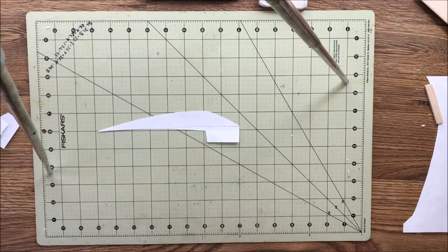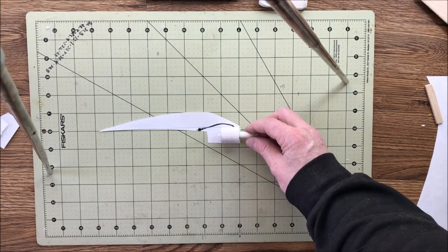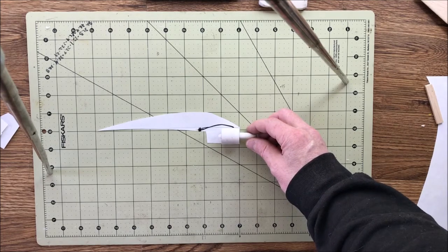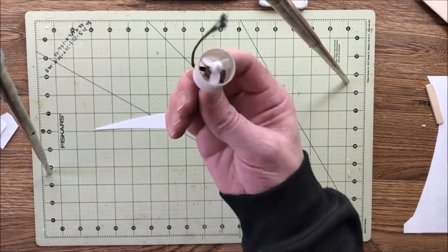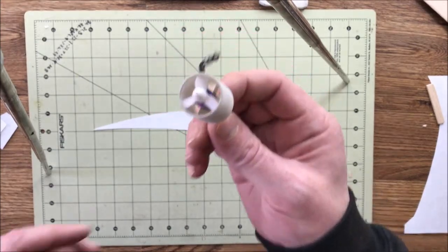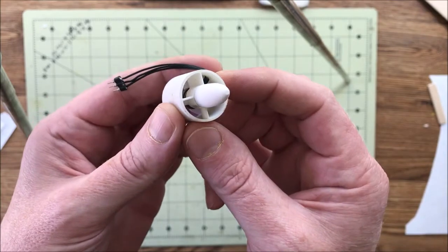This one is all thanks to Nitrocharged here on YouTube and RC Groups. If you like micros or EDFs or micro EDFs, go check him out. You won't be disappointed. I'll put a link for his channel down below. He drew up this shroud and had it 3D printed, stuck this little 0703 15,000 kV motor in it with a 20mm impeller.